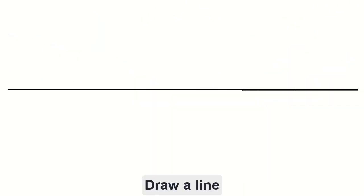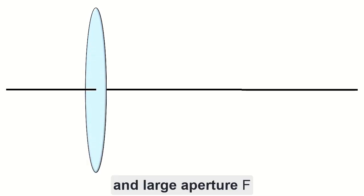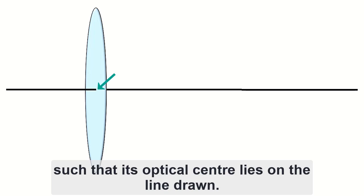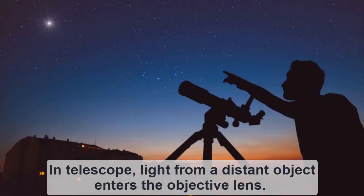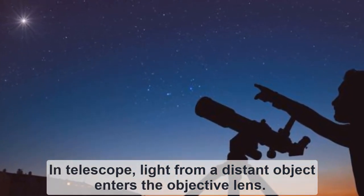Draw a line. Draw an objective lens of large focal length and large aperture such that its optical center lies on the line drawn. In telescope, light from a distant object enters the objective lens.